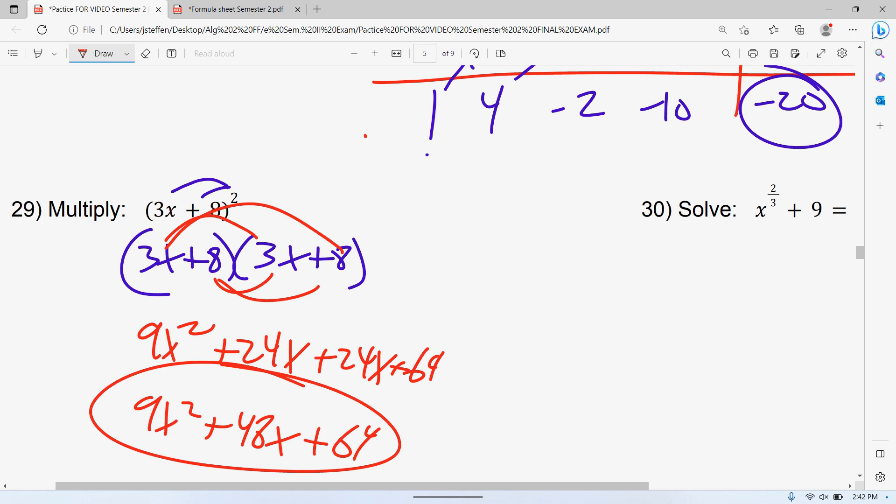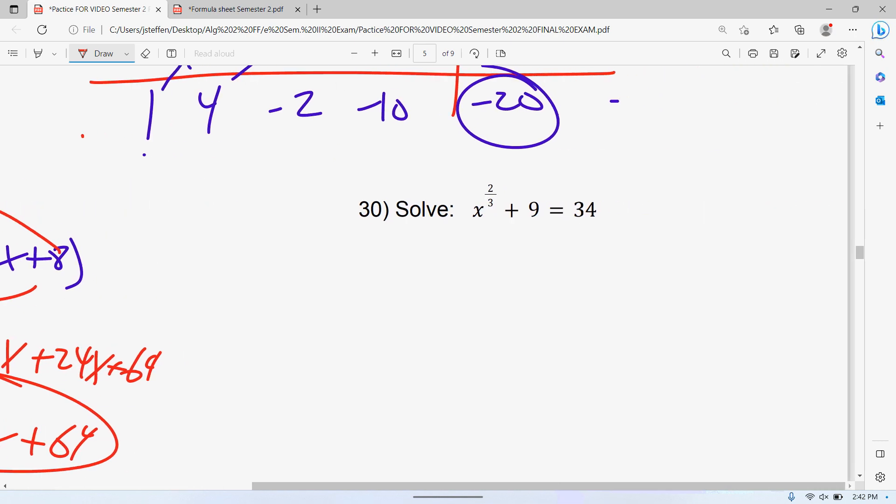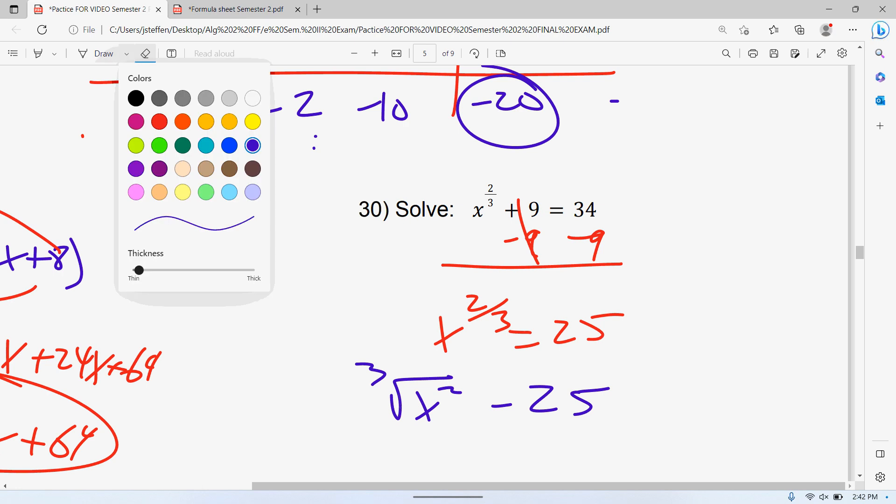30, solve this one. A couple different ways to do this one. First, on both ways you're going to subtract 5 from both sides. Now the way we did this in class is we change it to radical. So this is the same thing as the third root of x squared is equal to 5. We'll get rid of the squared first, whichever one you do first, but it makes it a little bit easier. I'm going to take the square of both sides. That cancels the square. So the square root of 25 is 5. Plus or minus the third root of x equals plus or minus 5.